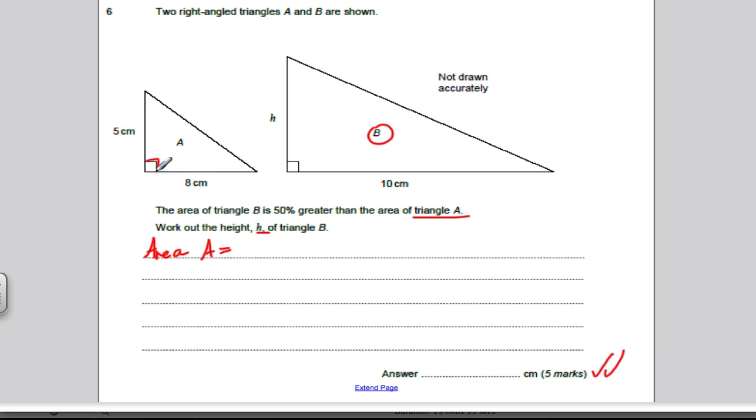Well, the area of a triangle is the base times the perpendicular height divided by 2. So 8 times 5 divided by 2, and 8 times 5 is 40, divided by 2 is 20 centimeters squared.